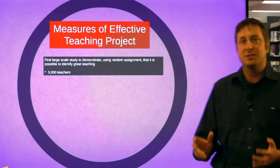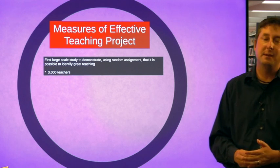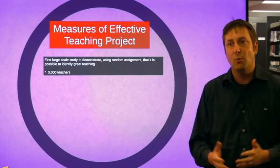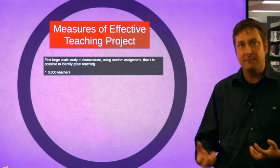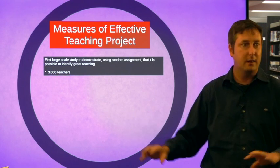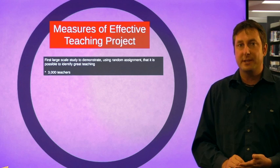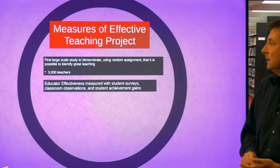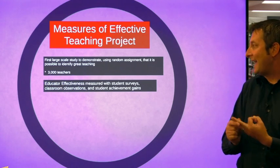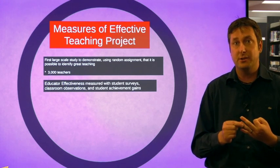It was the first large-scale study done in education to demonstrate that using random assignment, it's possible to identify great teaching. Within this study, they actually took 3,000 teachers and educator effectiveness was measured using student surveys, classroom observations, and student achievement gains. That should sound familiar because those are the three metrics used within the New Mexico model.